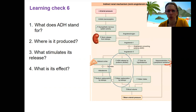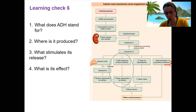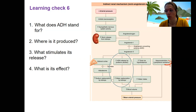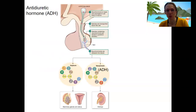Low blood pressure, high osmolarity, and high sodium specifically all cause release of ADH, and it's going to result in water reabsorption by the kidneys directly — so without sodium — and therefore increased blood volume. We saw this before in regulation of blood pressure.